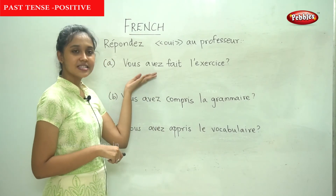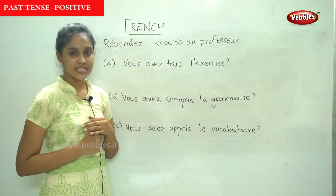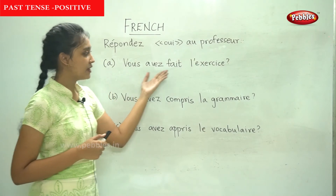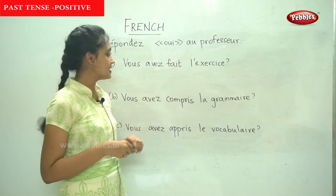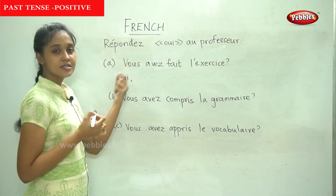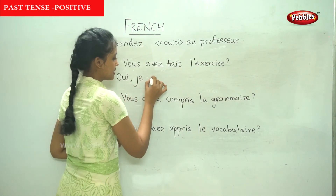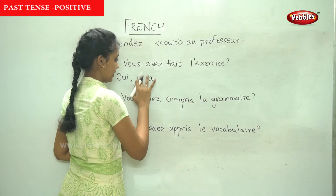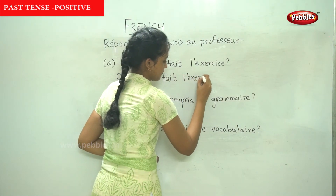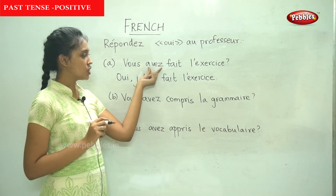Now we are going to answer the questions in the positive — répondez oui, as the professor. So the professor is asking questions and we answer oui. The first question: vous avez fait l'exercice? Have you done the exercise? We answer oui. Vous becomes je. The auxiliary is avoir, and avez becomes ai for je — with a vowel clash. J'ai fait l'exercice.